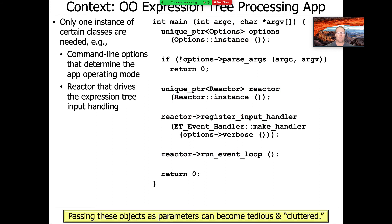Passing these objects as parameters to all the methods can become tedious and cluttered because you have to pass option parameters to everything and pass the dispatcher to everything. It's not that Singleton is necessarily bad — it's what it is relative to. And of course, if you need more than one of something, then Singleton becomes a really bad idea. But in our case, we really only need one of these things.